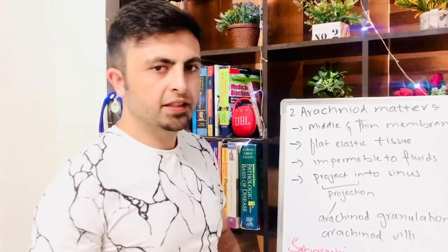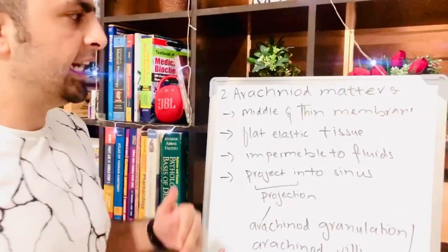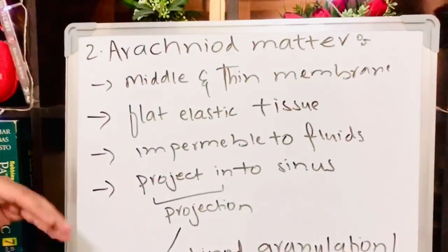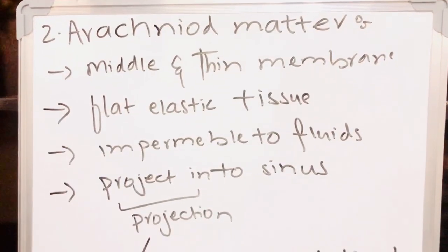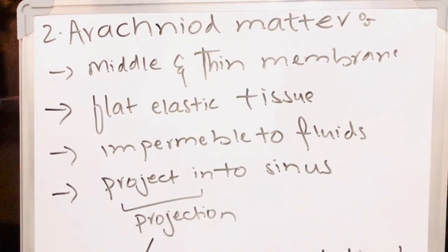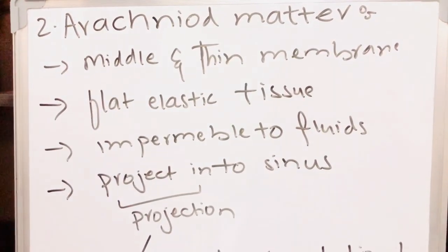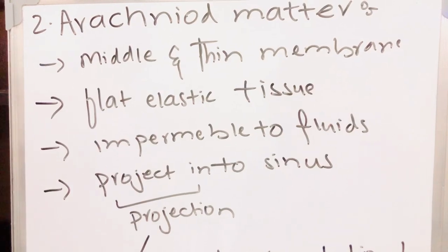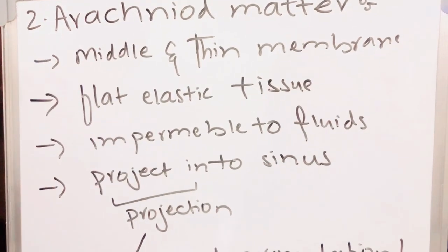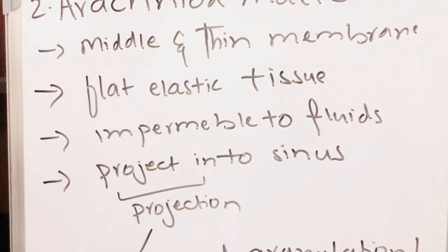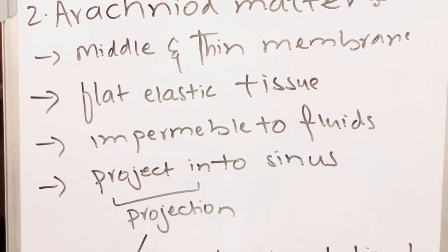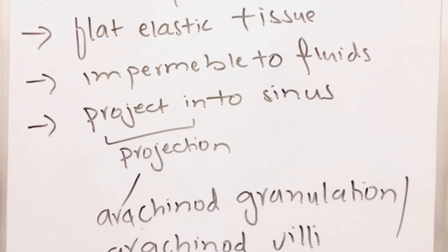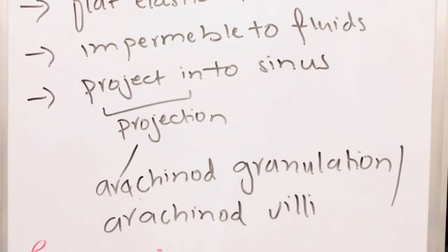The arachnoid mater is thin, made up of flat elastic tissue, and it is impermeable to fluids. It is very selective for the transfer of materials. It also projects into the sinuses, and these projections are called arachnoid granulations.